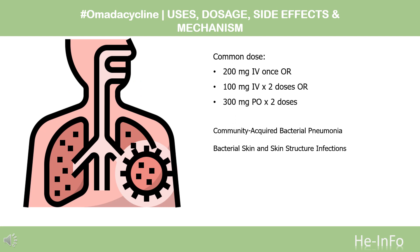Dose — Community-Acquired Bacterial Pneumonia (CABP): Indicated for treatment of CABP caused by susceptible microorganisms. Loading Dose Day 1: 200mg IV once, or 100mg IV x 2 doses, or 300mg PO x 2 doses. Follow with maintenance dosing starting on Day 2. Maintenance Dose: 100mg IV daily or 300mg PO daily. Treatment Duration: 7–14 days.